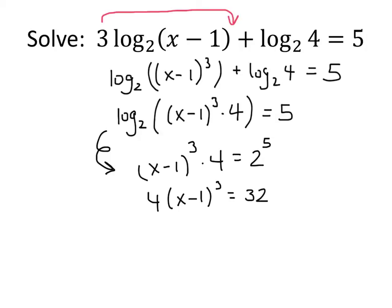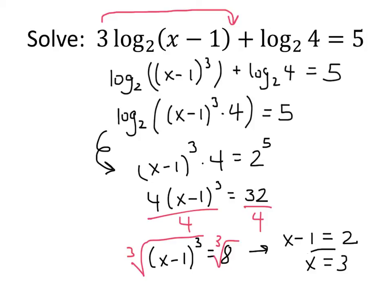So now we've just got to isolate x. Again, we've got an equation that doesn't have logs in it anymore, which is really the goal. Whenever you see an equation with logs in it, you want to get rid of the logs. So we're going to divide both sides by 4. That gives us x minus 1 cubed equals 32 divided by 4, which is 8. Now we're going to take the cube root of both sides. When we do that, on the left-hand side, we just get x minus 1. On the right-hand side, the cube root of 8 turns out to be 2. And then we just have to add 1 to both sides, and the answer that we're looking for is x equals 3.